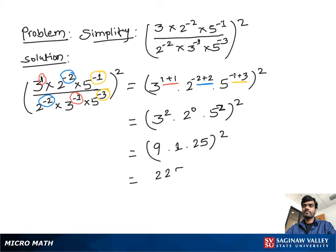9 times 1 times 25 is 225, all to the second power. Then we get 225 squared, which means 225 times 225 equals 50,625. That is our answer.